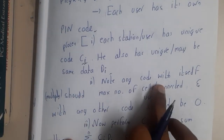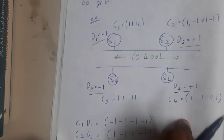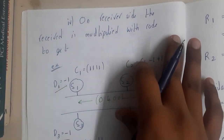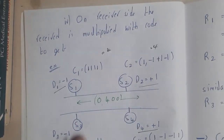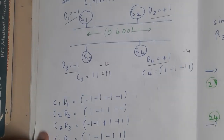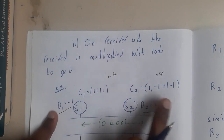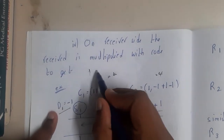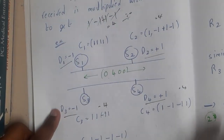Two key properties of the codes: First, any code multiplied by itself and summed should give the maximum number — equal to the number of stations (here, 4). For example, 1×1=+1 and -1×-1=+1, so summing four such products gives 4. Second, if you multiply any code with a different station's code and sum the products, you should get zero. For example, [1,1,1,1] multiplied element-wise with [1,-1,1,-1] gives 1, -1, 1, -1, which sums to zero.